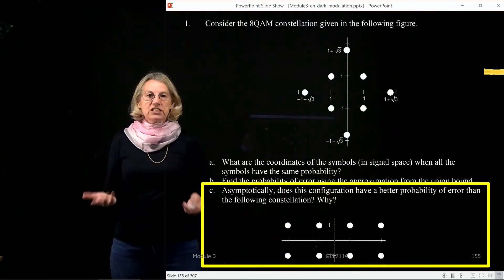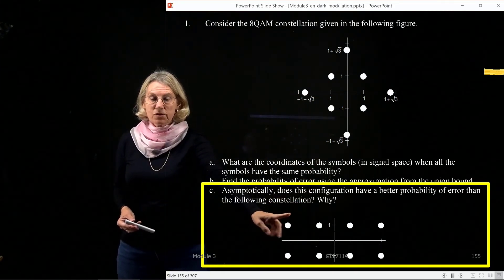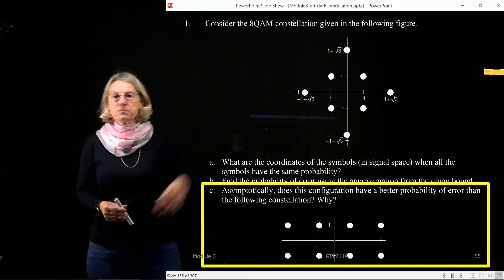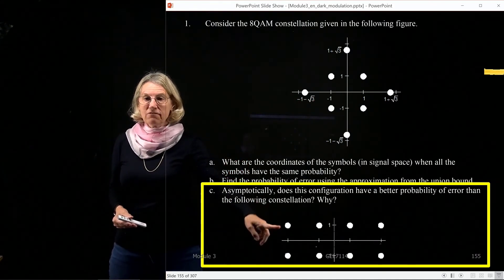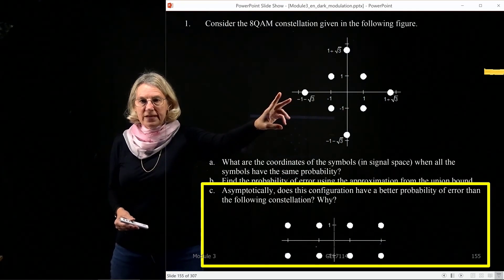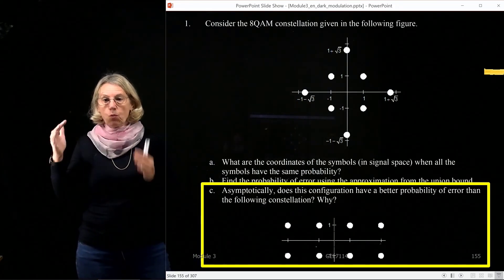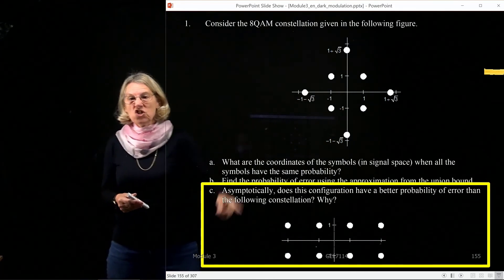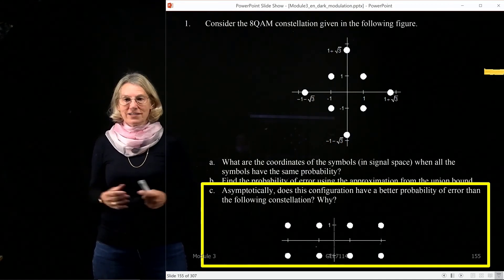The last part actually asks how does this one compare to this constellation? Here is a rectangular constellation from QAM. You would have to go through really this problem again. So you have to do everything that we did in A and B you would do again for this constellation. Then you would get a loss compared to QPSK for this one, a loss compared to QPSK for this one, and you see relative to one another which has better probability of error. Whichever one of these two had less loss compared to QPSK would be the better constellation between the two.